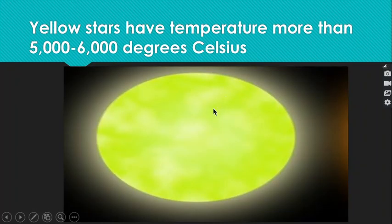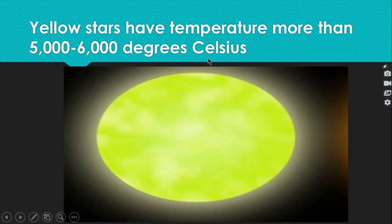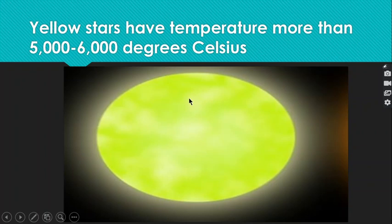Yellow stars have a temperature of more than 5,000 to 6,000 degrees Celsius. Our sun is a yellow star because it has a temperature of 5,000 to 6,000 degrees Celsius. Yellow stars are colder than white stars.